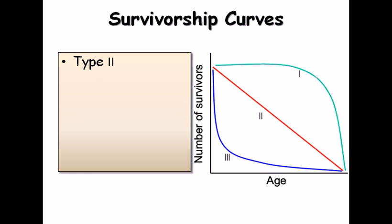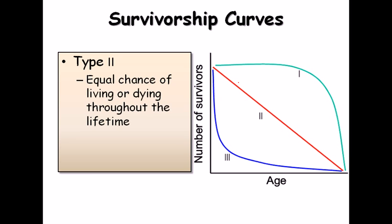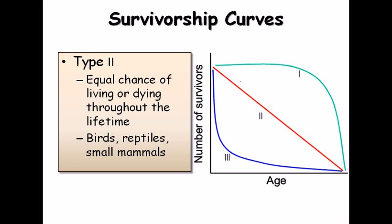The Type 2 survivorship curve is a straight line, indicating an equal chance of living or dying throughout the lifetime. There is no spike in infant mortality or in deaths at old age — survival is equally distributed across the lifespan. Examples are birds, reptiles, and small mammals.